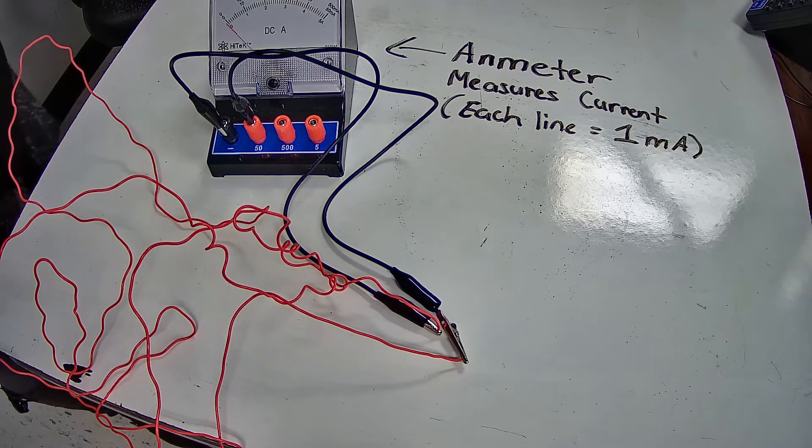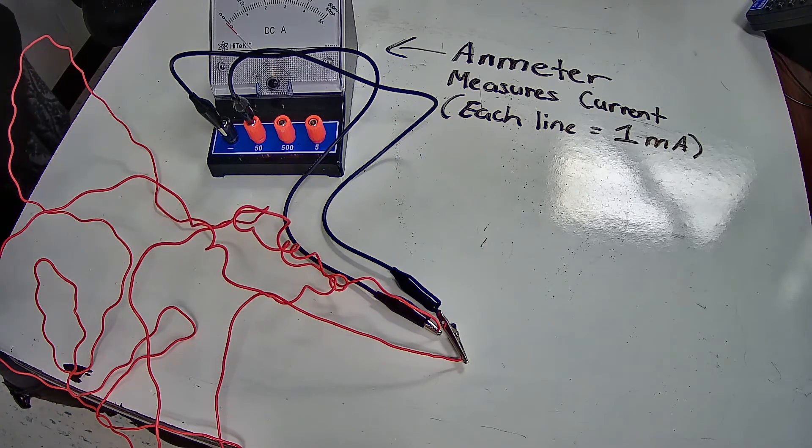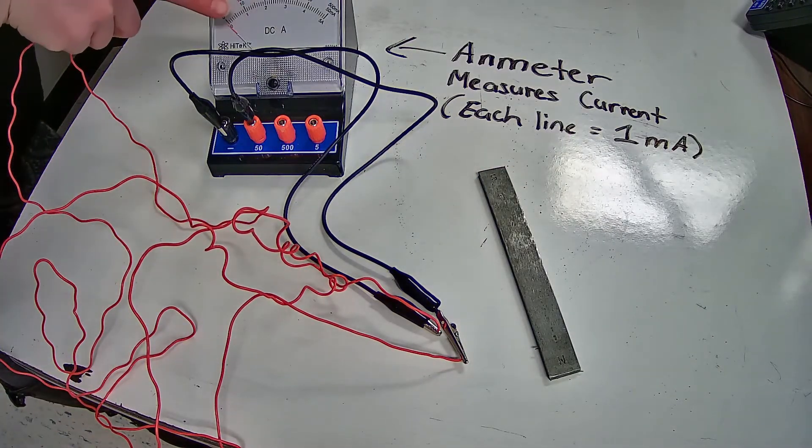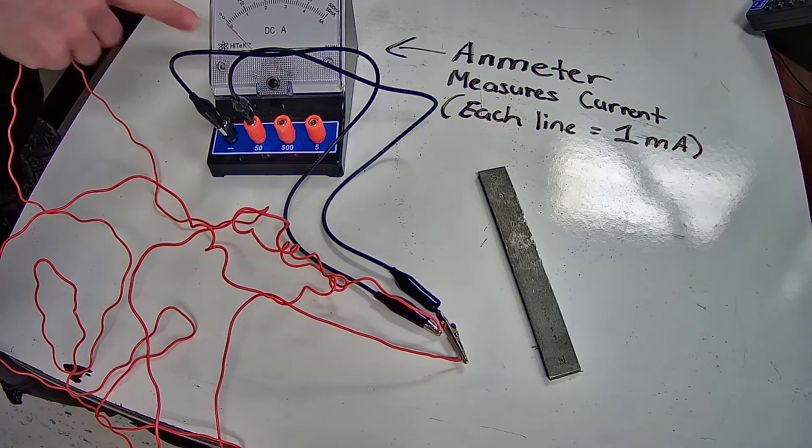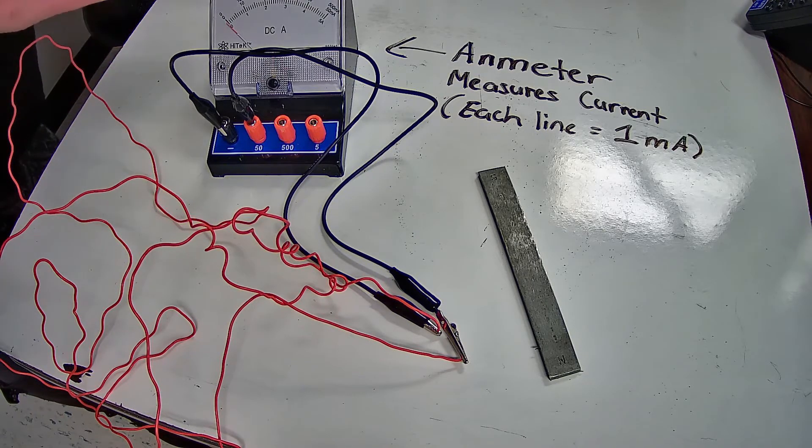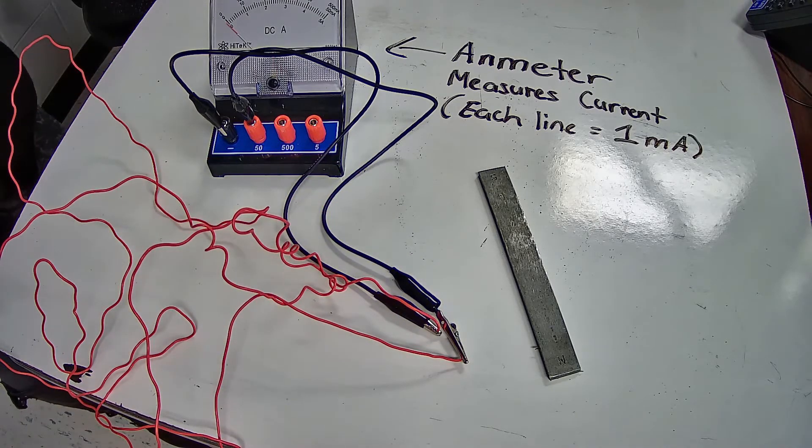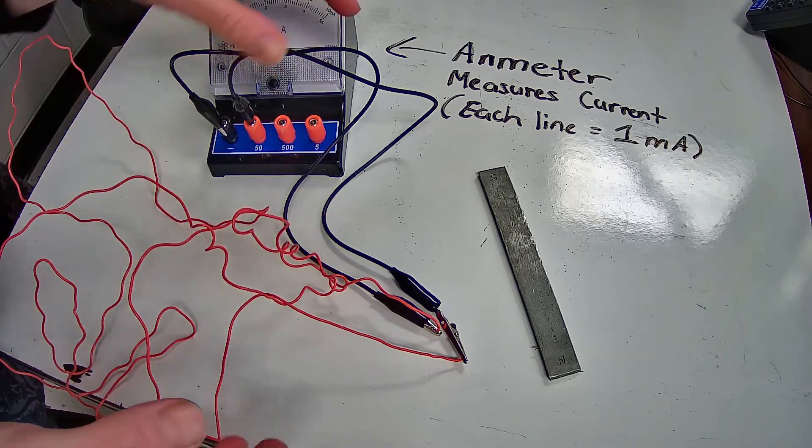Each year I ask my students to try to generate electricity given these supplies. We've got an ammeter, which is going to measure the current for us and help us figure out if we did generate electricity or not. They've got a magnet and some wire. Right now this is connected in a circuit.